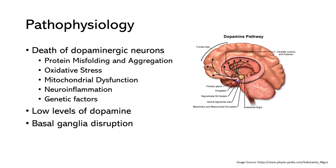The pathophysiology involves the progressive degeneration and death of dopaminergic neurons. These are a specific type of nerve cell that produces the neurotransmitter dopamine — a chemical messenger in the brain that plays a critical role in regulating movement, mood, and other functions. The exact cause is not fully understood, but there are several mechanisms that have been proposed.